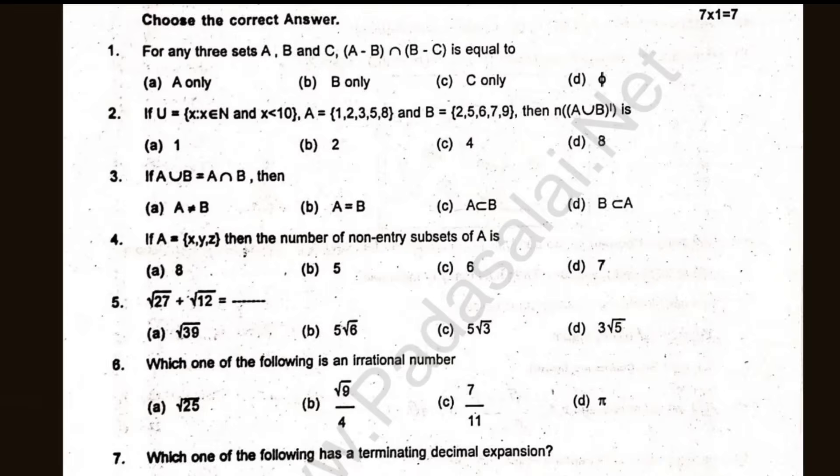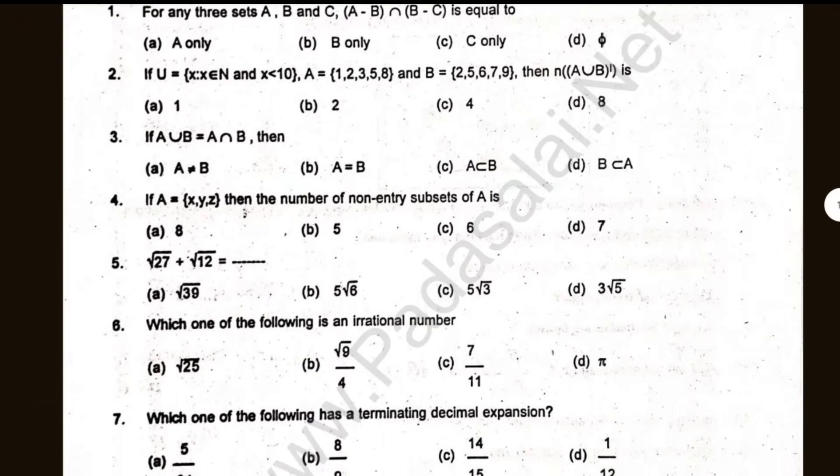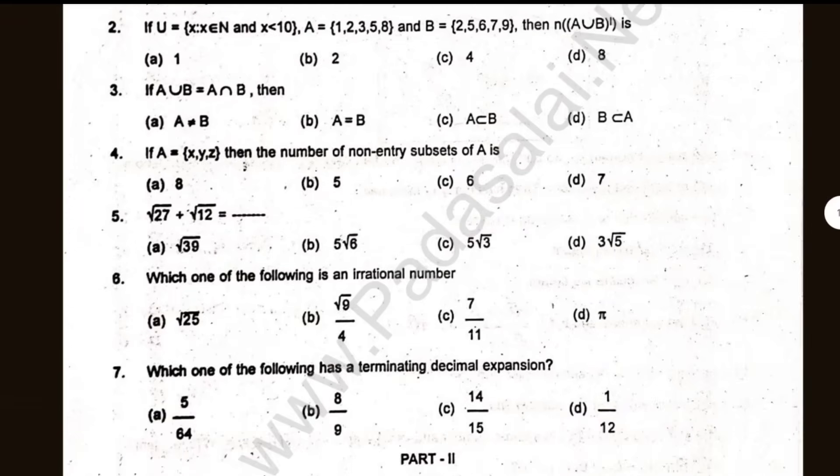Let's see. For any 3 sets A, B and C, A minus B intersection B minus C is equal to what? If U is equal to A union B is equal to A intersection B, then what? Look at the 1 mark section.